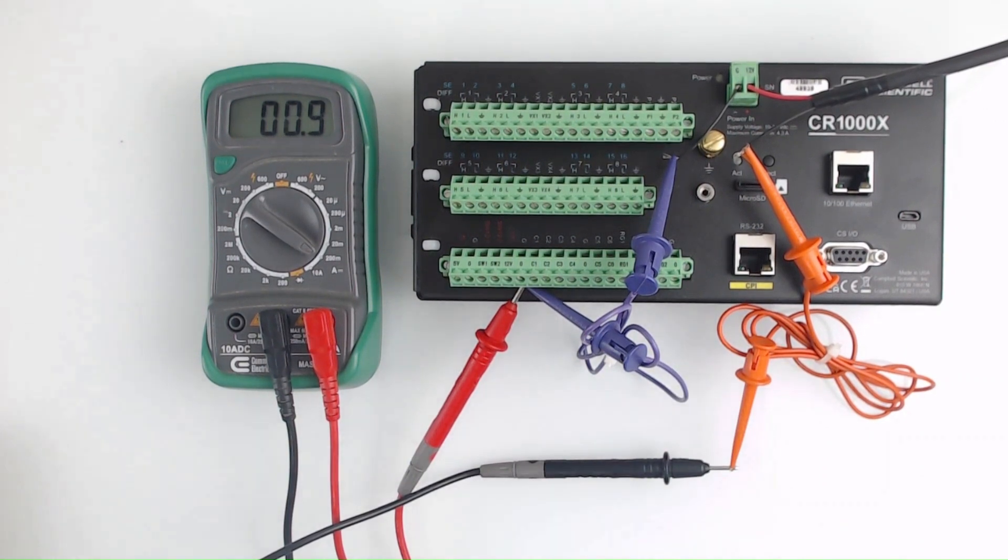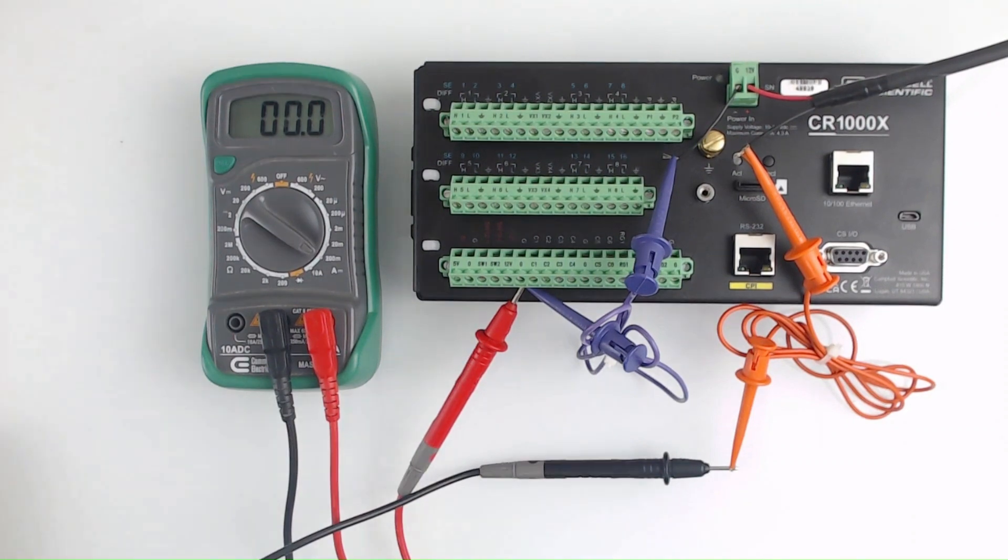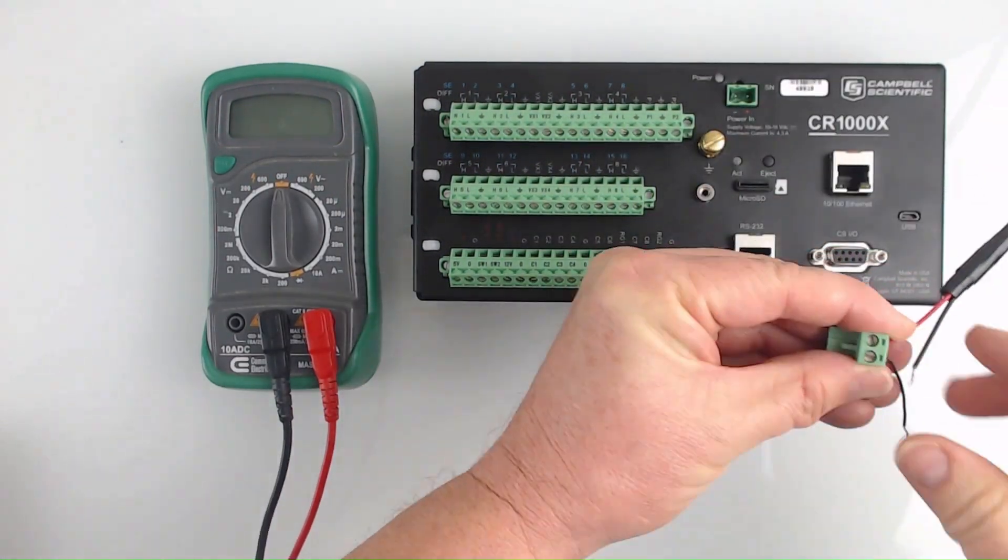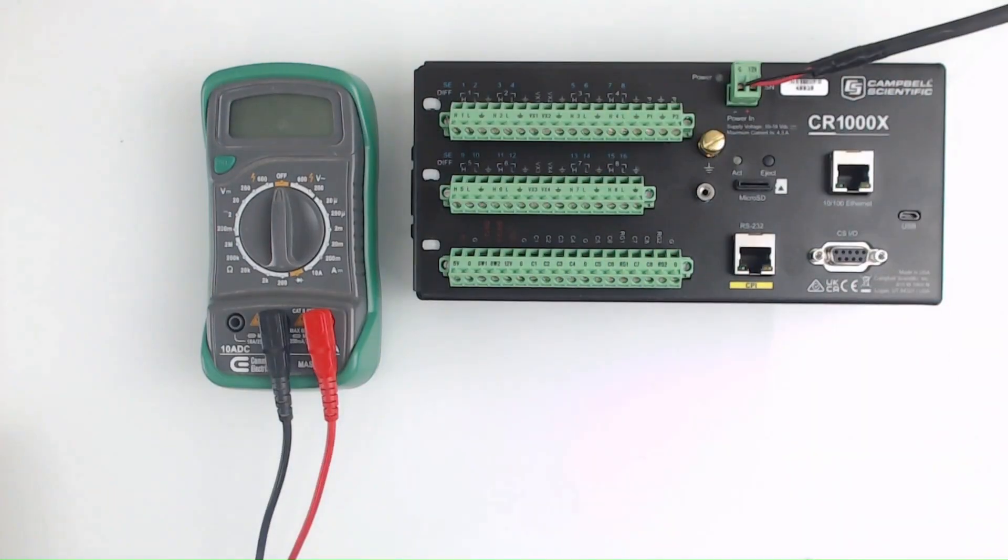Now I'll turn off the power and put everything back together as it was before I broke the circuit for this test. Once that is finished, I turn the power supply back on so that the data logger is ready to run normally again.